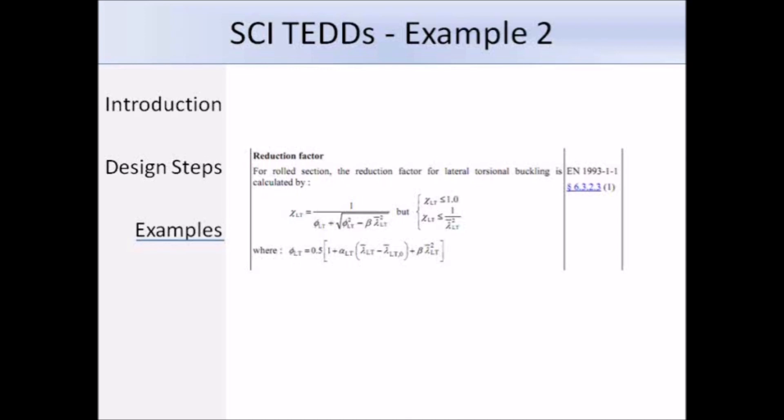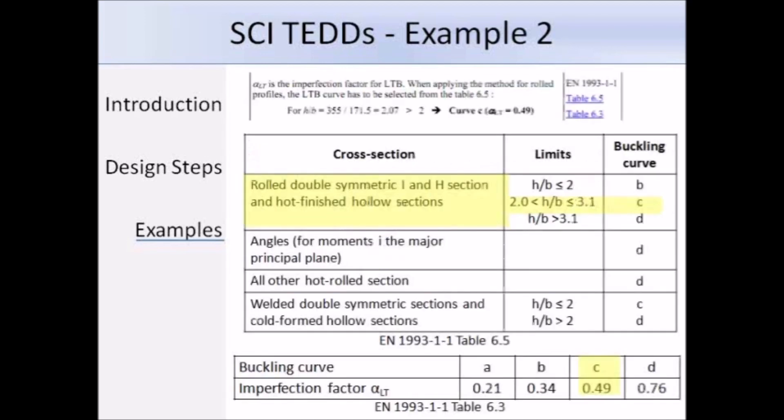So before we can work out the reduction factor, we need to work out phi LT, and to work out phi LT, you need to know alpha LT. Now for a rolled section, whose height over breadth ratio is 2.07, we're going to be using buckling curve C, and that means that alpha LT is 0.49, and we need to get phi LT, and that works out as 1.488, and putting that into the expression for chi LT, we get 0.427.